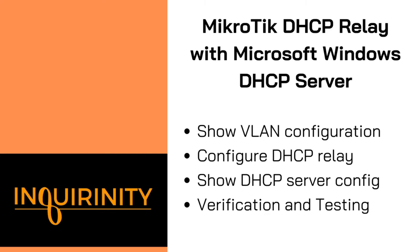In some deployments, DHCP service is usually placed when you have a full-pledge server. For instance, in a Windows Server, there are many advantages, particularly in a domain environment — you also have other features like DHCP failover or clustering. So we will revise our centralized DHCP server demo, in which this time we will have our Windows Server act as the central DHCP server for all our VLANs. We will configure VLAN in our Microtik, and our Microtik will act as the DHCP Relay, accommodating DHCP requests and sending them to our Windows DHCP server.